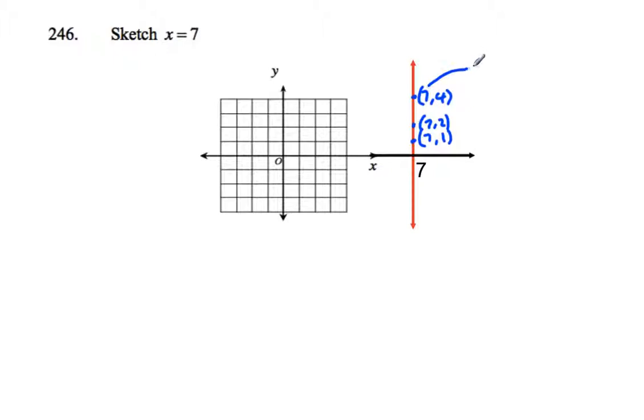Then we've got the point 7, 2 and up here a bit further 7, 4. You can see the x always equals 7. That's how I remember it for all these points. Just have a think about the points that lie on the line that you're proposing to have for this particular sketch.